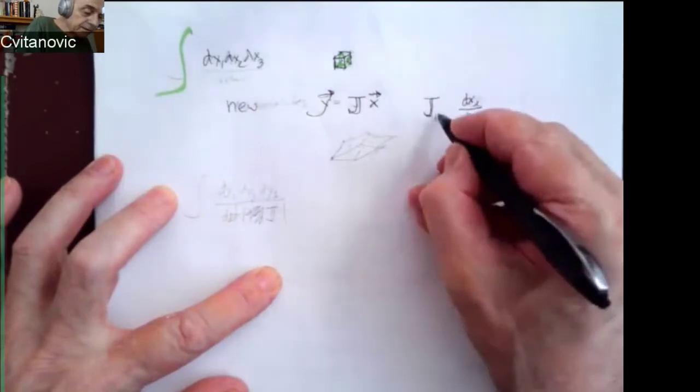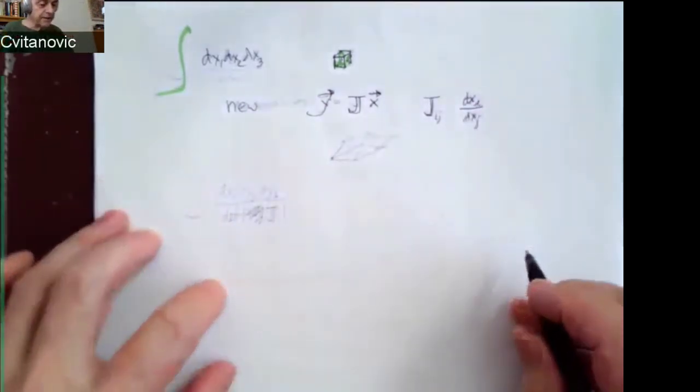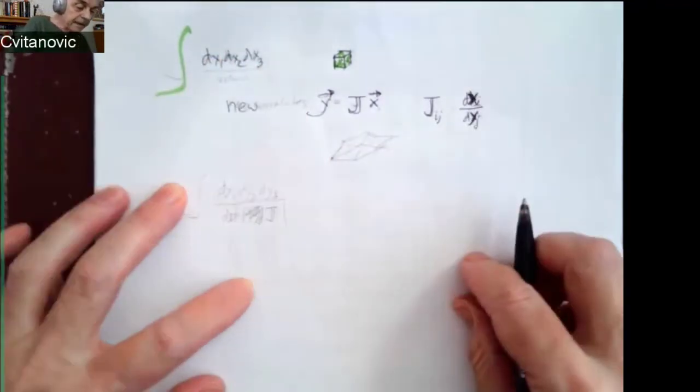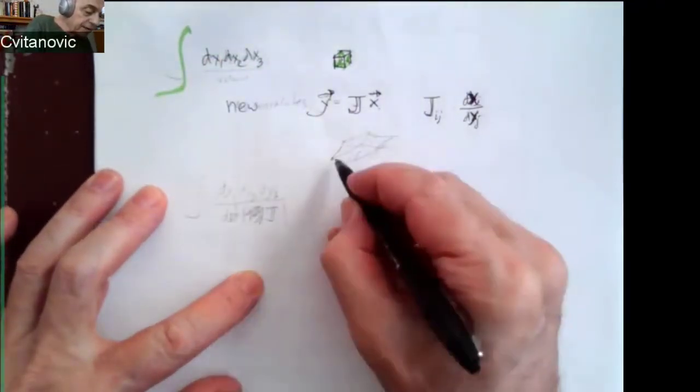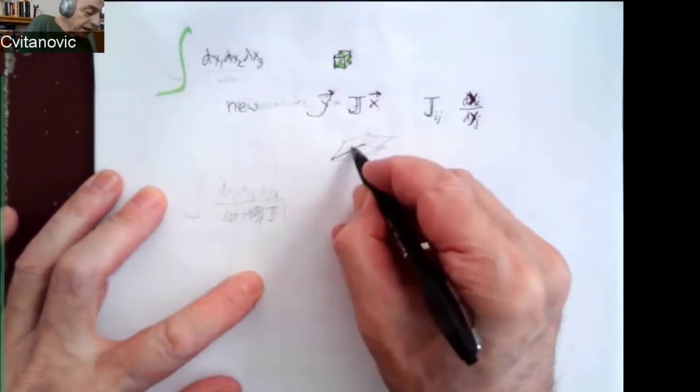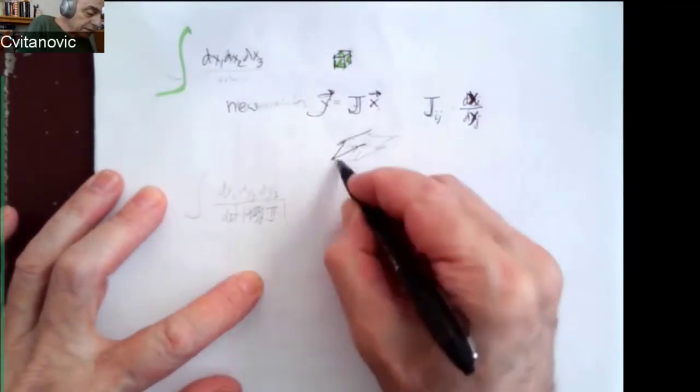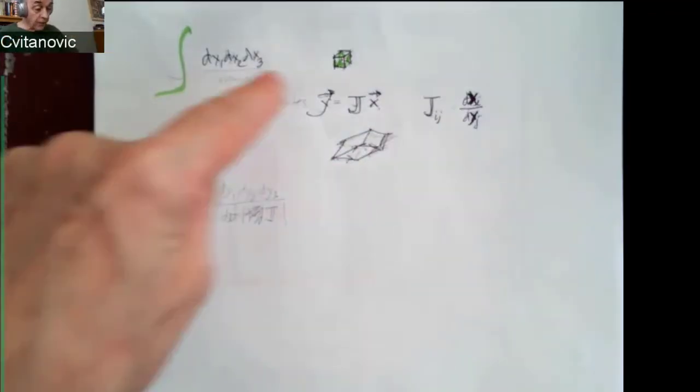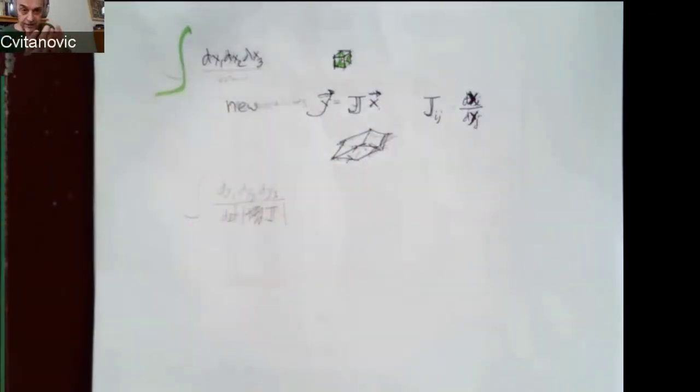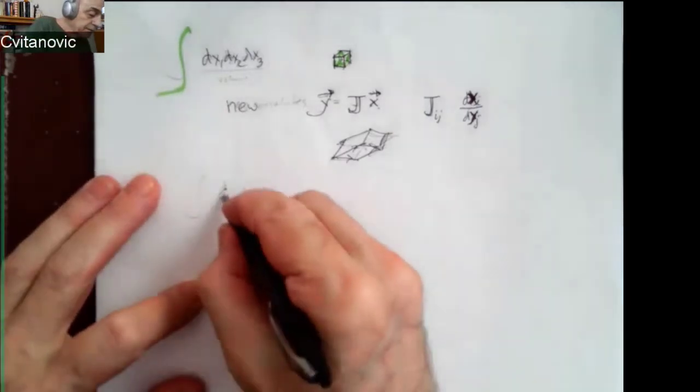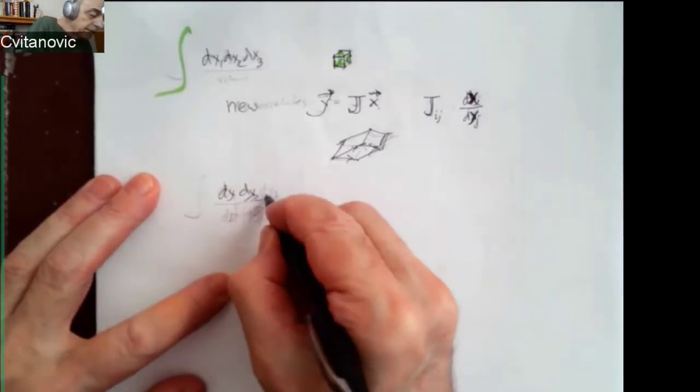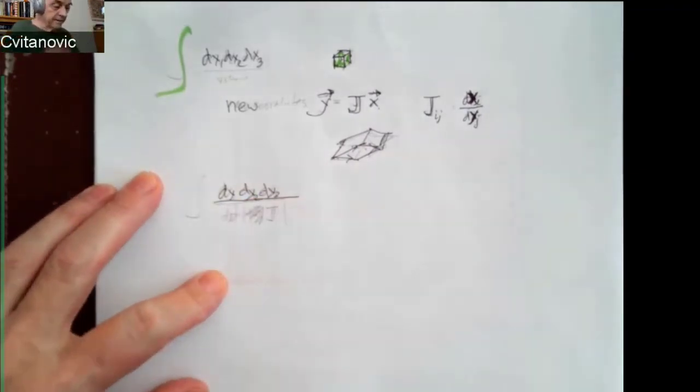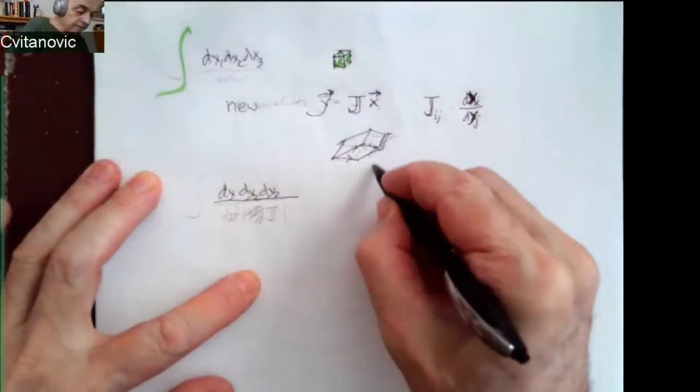So there is this matrix of the original coordinates. And what this thing describes is that in every original direction of hypercube, now I've gone into a parallelepiped. This is a volume. We're integrating over volumes.